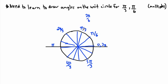Two pi over six reduces to pi over three — that's good. So this is one pi over six, two pi over six. This over here must be three pi over six — straight up. That must be three pi over six, but three pi over six reduces to pi over two.